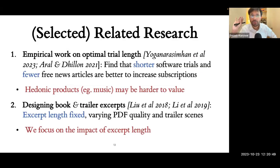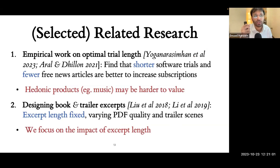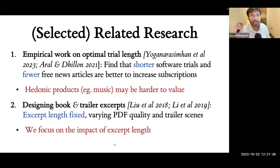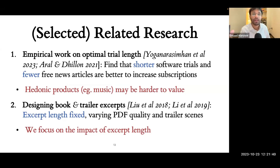This work is related to two strands of literature. The first is the empirical literature on optimal free trial length — including work by Sinan Aral and Parambir Dhillon, who find that shorter trials and fewer free news articles are actually better for consumption. However, it may not be right to extrapolate from software and news subscriptions to hedonic goods like music, which may be harder to value. The second strand is on excerpt design for books and trailers, where excerpt length is held fixed exogenously. This paper complements that literature by looking at length and the impact of length net of cannibalization.